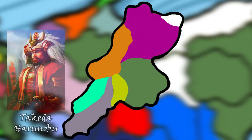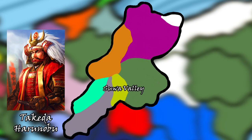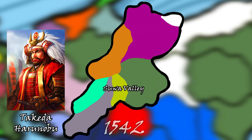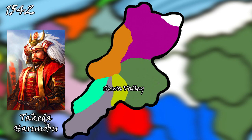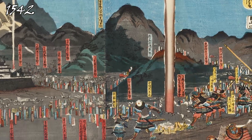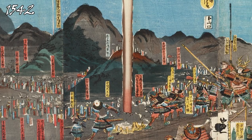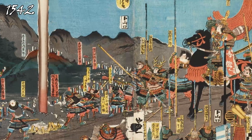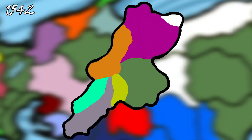Haranobu's first goal was the invasion of the Suwa Valley, lorded over by Suwa Yorishige, who was actually Haranobu's brother-in-law. Beginning in 1542, Haranobu used a political conflict between two shrines in the valley as a reason to intervene. However, when his army came marching, the clans of Shinano quickly banded together once again to form an army in opposition to Haranobu's advance. These clans included the Suwa, Ogasawara, Murakami, and Kiso.